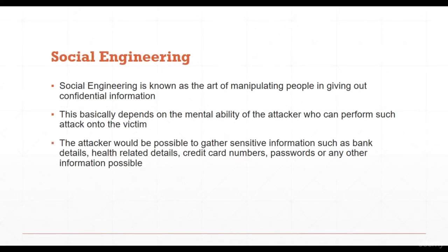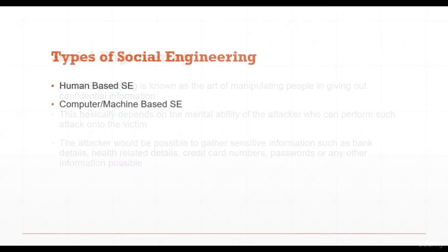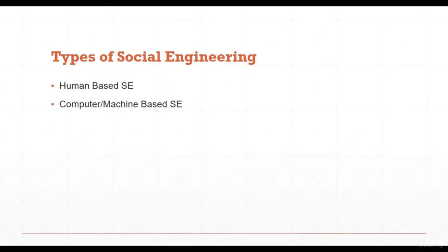Social engineering is the art of manipulating people into giving out confidential information, depending on the mental ability of the attacker. The attacker can gather sensitive information such as bank details, health-related details, credit card numbers, and passwords. The two major types of social engineering are human-based and computer or machine-based social engineering.